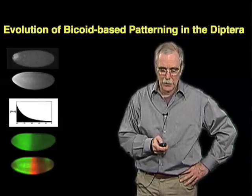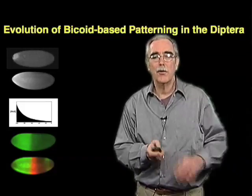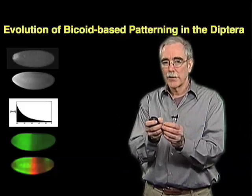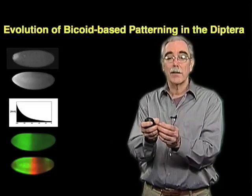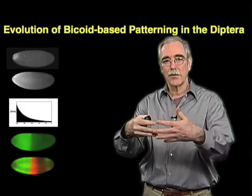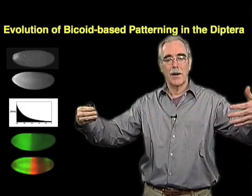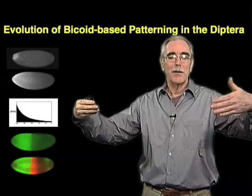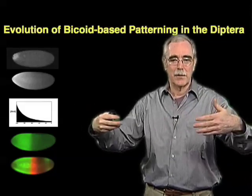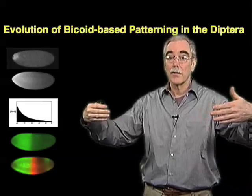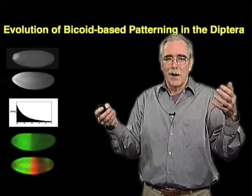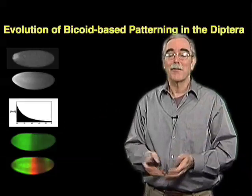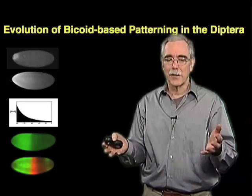The problem with that model arises if you go outside of Drosophila. If you go outside of fruit flies and extend your observations to other kinds of embryos, from even other insect species, even other fly species. As we all know from our own personal experience, flies come in different sizes.